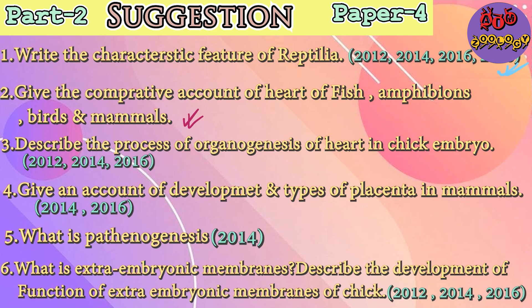Question number 3: Describe the process of organogenesis of the heart in the chick embryo. This question has come from 2012, 2014 and 2016 — it is very important. Question number 4: Give an account of the development and types of placenta in mammals. This question is also very important and very easy.